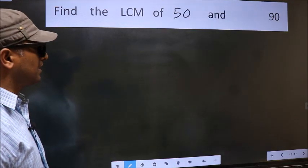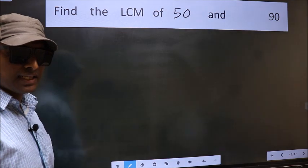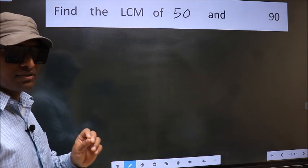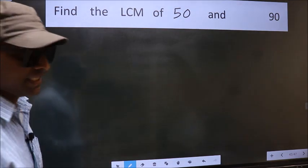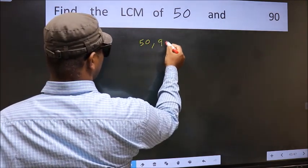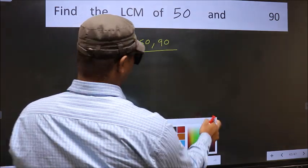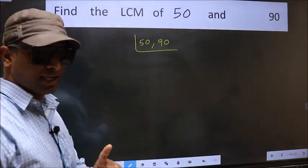Find the LCM of 50 and 90. To find the LCM, first we should frame it in this way: 50, 90. This is your step 1.